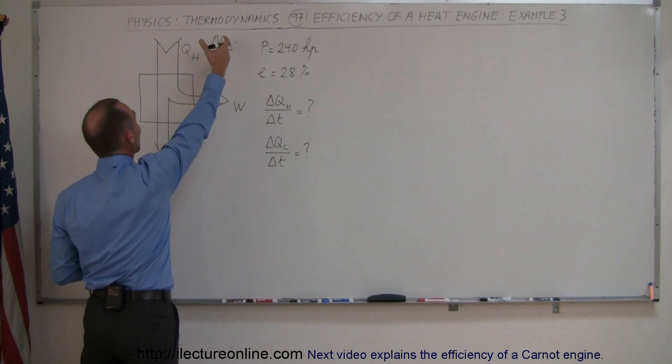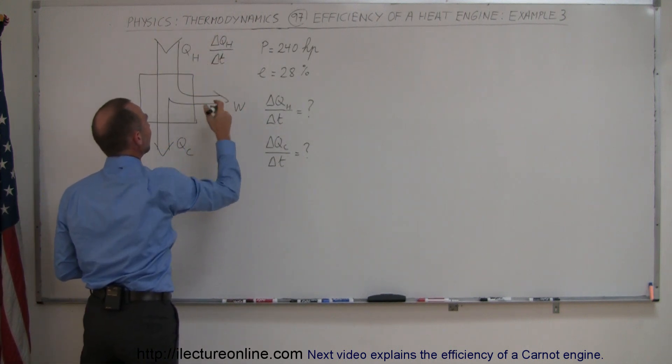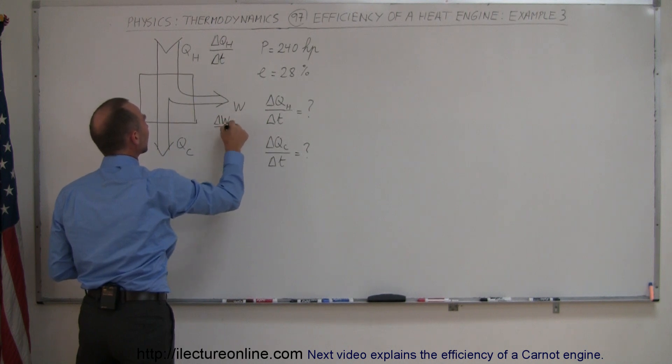the rate at which heat is extracted from the hot reservoir per unit time, and you make this the dw dt, the rate at which work is done per unit time,